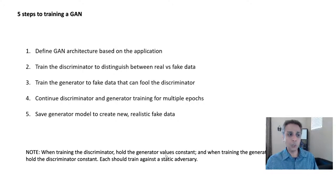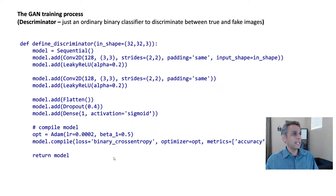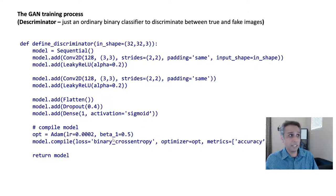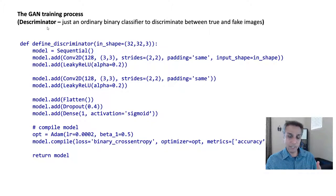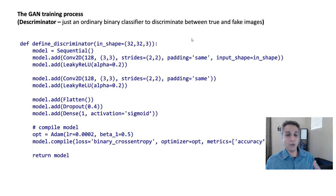When training the discriminator, hold the generator constant, and when training the generator, hold the discriminator constant — you're training one against a static adversary. Looking at some code: the discriminator is just a binary classifier, whether it's real or fake, similar to classifying cat vs. not-cat or malarial cell vs. not. Using the sequential method here since it's straightforward one layer after the other.